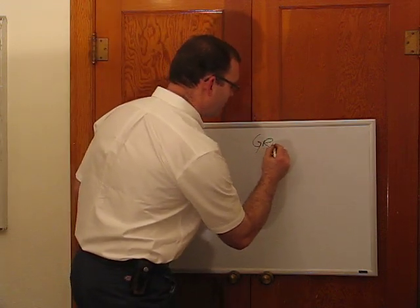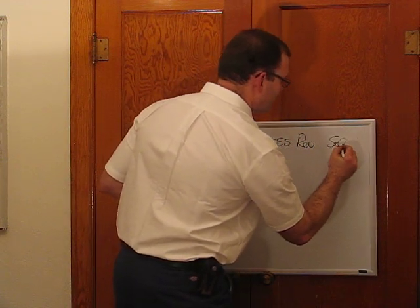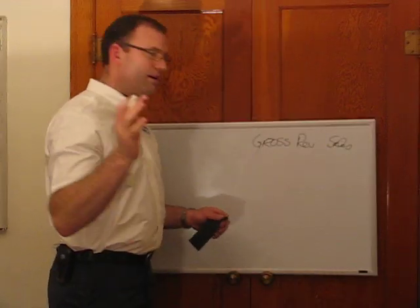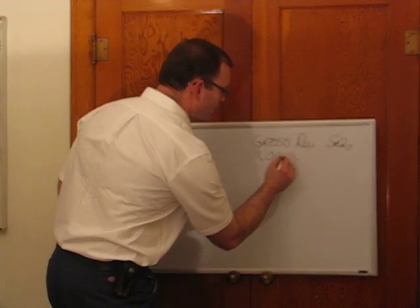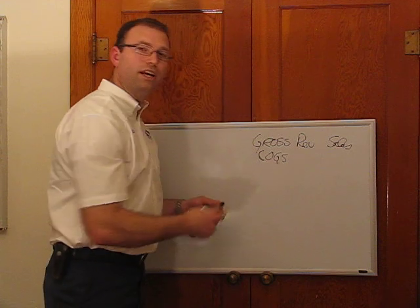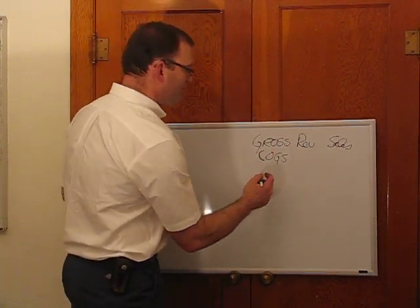The first one is our gross revenue, also called sales. This is all the money that comes into our business. Then we have our cost of goods sold, which is what it costs us to provide that service or have those goods available for sale.